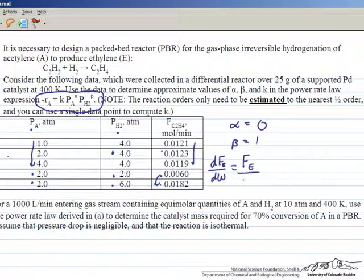Therefore, the flow rate of ethylene over the total catalyst mass equals the reaction rate constant times the partial pressure of hydrogen to the first power, because we've determined that the partial pressure of acetylene doesn't matter.